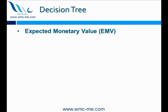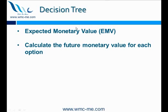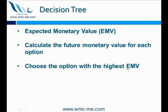The decision tree technique is based on what is called Expected Monetary Value, or EMV. We simply calculate the future monetary value for each option that we have. There is a formula for it, which is why it has more scientific grounds. When we calculate the EMV of all the options, we choose the option with the highest EMV — the option with the highest expected monetary value should be the best option for our situation.